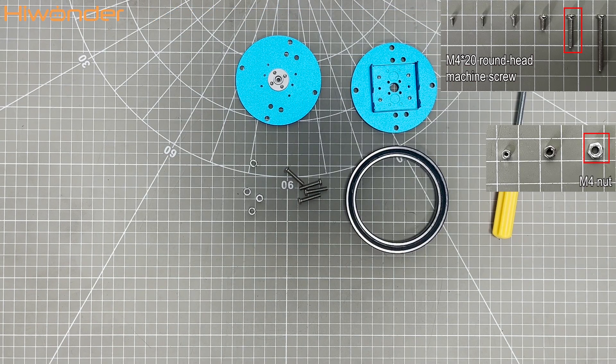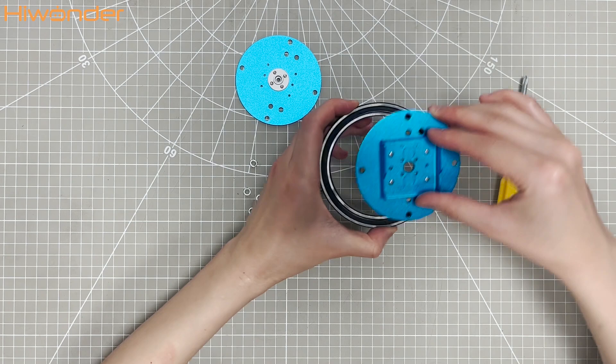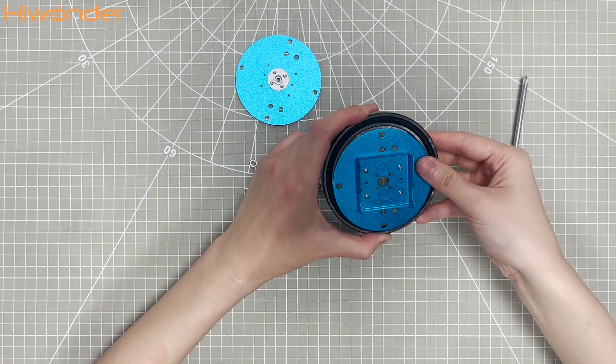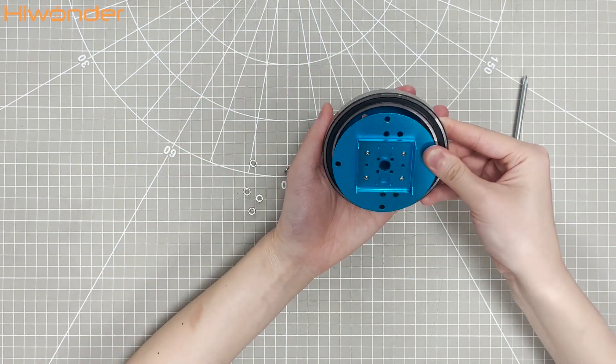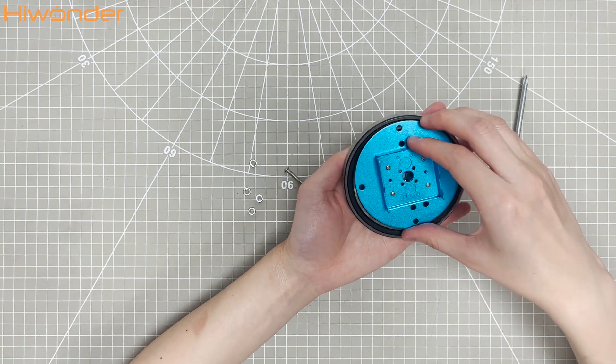Moving on to the third step, assemble these two round brackets and the bearing together using screws and nuts, ensuring that the servo horn and the side bracket are facing outwards. The side bracket should be fixed on the top and the servo horn on the bottom.